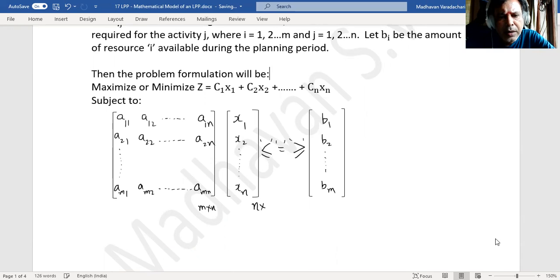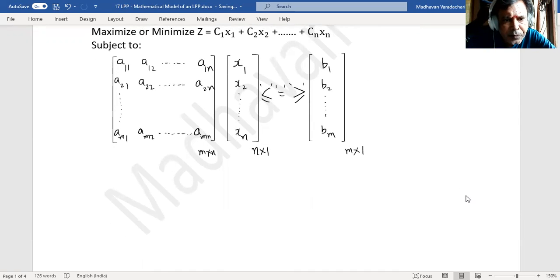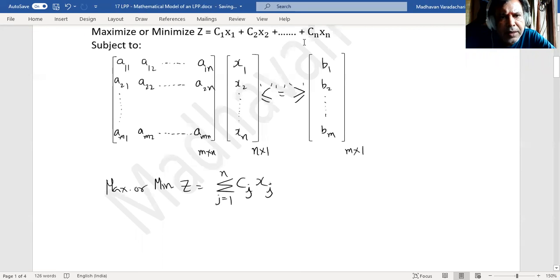In short, we can say max or min z equal to summation cjxj, where j takes the values 1 to n. That is what it is. If I substitute, I will get this expanded expression: first, and then second, and then and so on up to n, subject to summation aijxj where j ranges from 1 to n for all i equal to 1 to m.